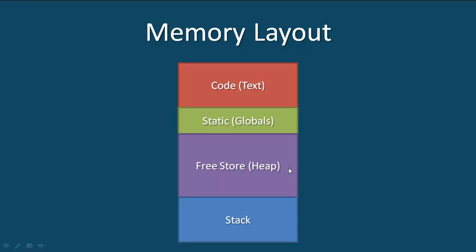In C++, we actually have to manage the heap area of memory. Whenever we're executing a program and need to allocate memory dynamically at runtime, it comes from this area. But it is our responsibility to deallocate any memory we allocate from here.